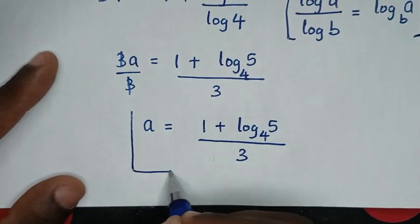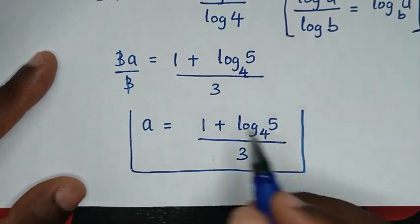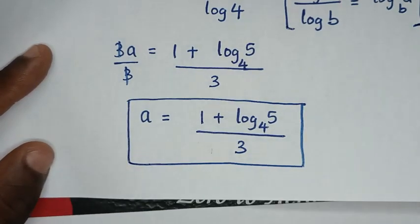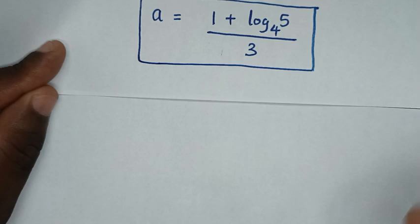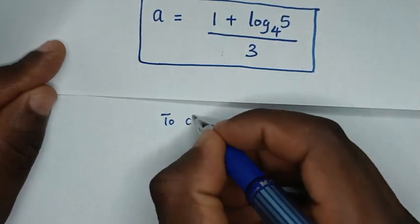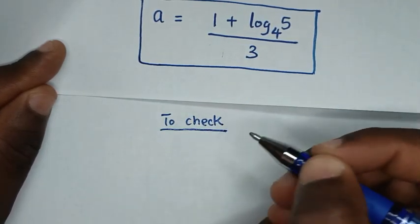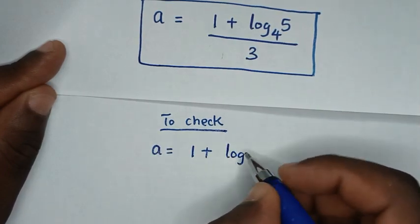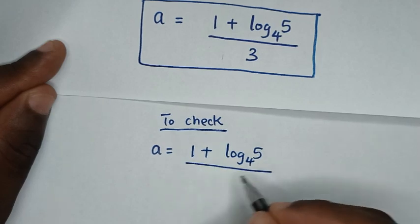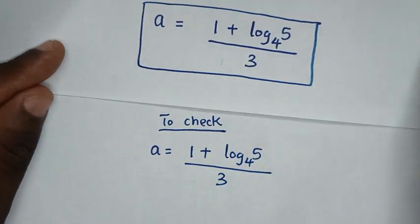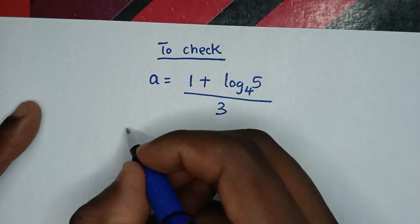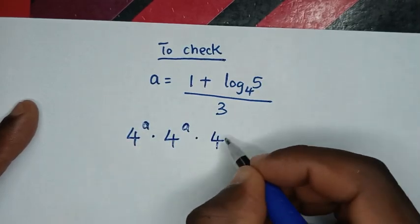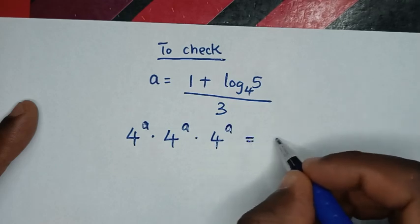This is the final answer for the value of a in this problem. Now let's verify this answer. To check, we take our answer a equals 1 plus log of 5 base 4 over 3, and recall the original problem: 4 power of a times 4 power of a times 4 power of a equals 20.